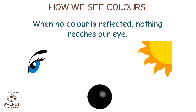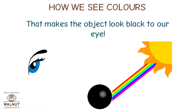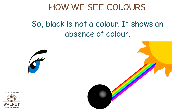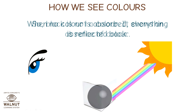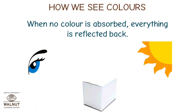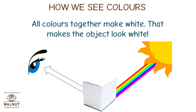When no color is reflected, nothing reaches our eye. That makes the object look black. So black is not a color — it shows an absence of color. When no color is absorbed, everything is reflected back. All colors together make white, and that makes the object look white.